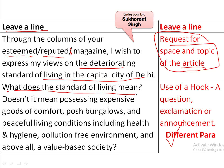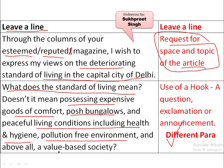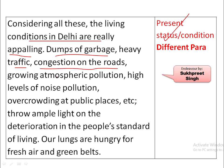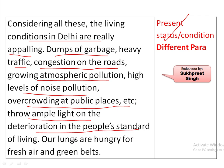'Doesn't it mean possessing expensive goods of comfort, posh bungalows, and peaceful living conditions, including health and hygiene, a pollution-free environment, and above all, a value-based society?' We've described what standard of living we expect. Now we talk about the present status. 'Considering all these, the living conditions in Delhi are really appalling — dumps of garbage, heavy traffic, congestion on the roads, growing atmospheric pollution, high levels of noise pollution, overcrowding at public places — these all throw ample light on the deterioration in the people's standard of living in the capital city.'